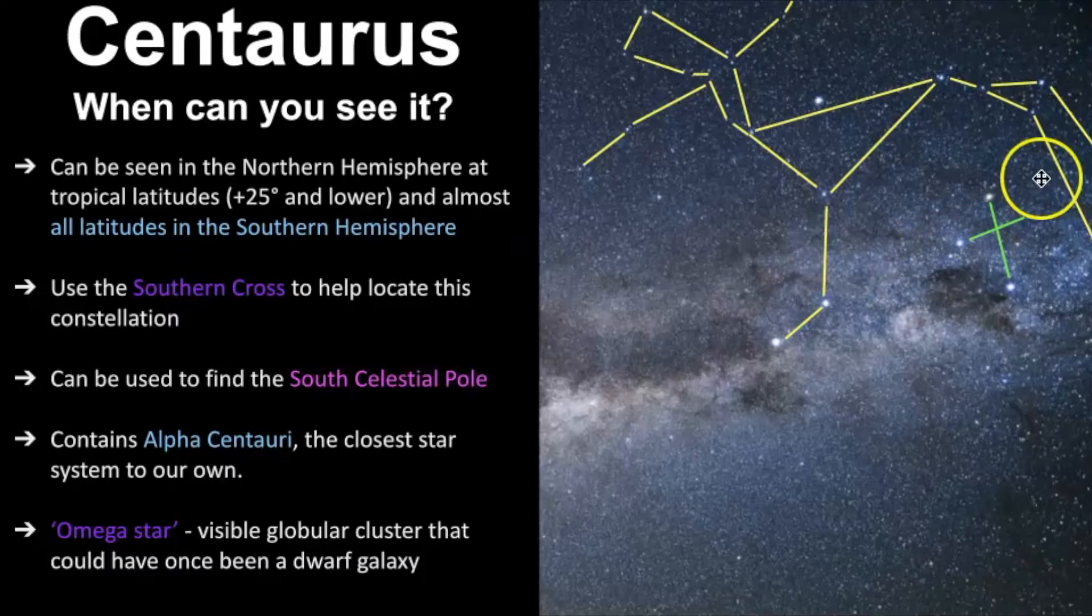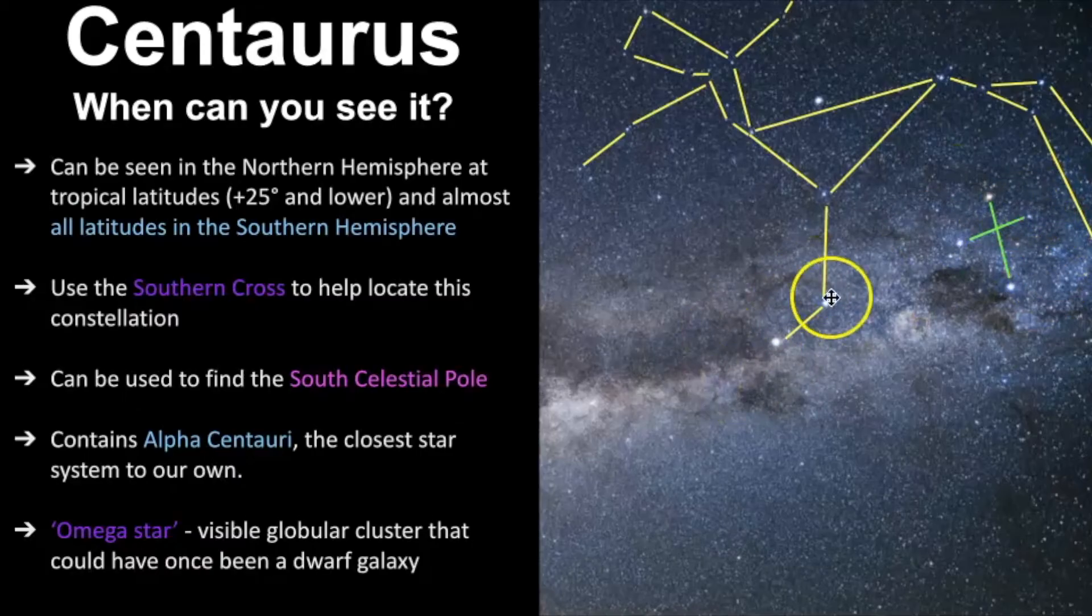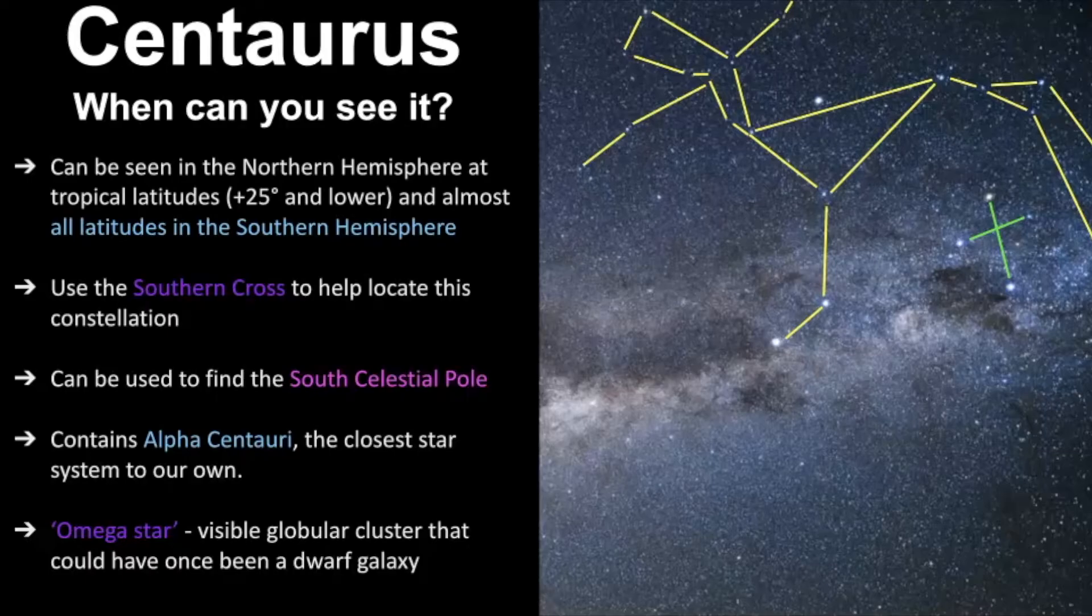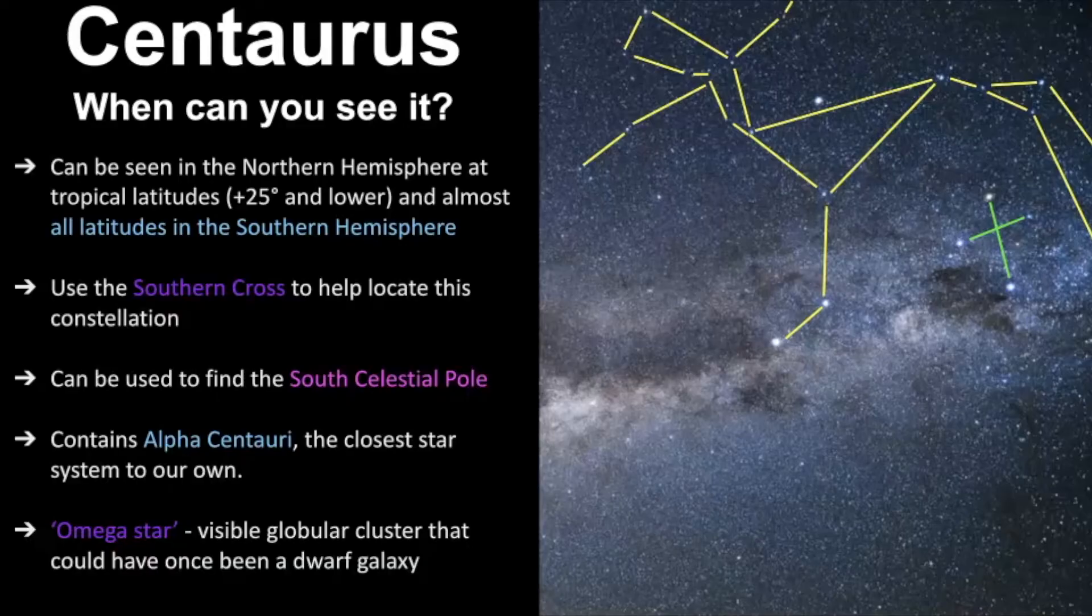You can also use the Southern Cross to help you locate this constellation. That's how I found Centaurus. I knew where the Southern Cross was and then I was like, I don't know what these two stars are. So I looked it up. I was on a field trip with my astronomy students and I looked it up on my phone. What are those two stars right next to the Southern Cross that are really bright? And here it was Alpha Centauri and I've known about Alpha Centauri since a kid. I was always really fascinated and knew that was like the star that's four light years away.